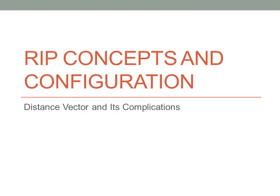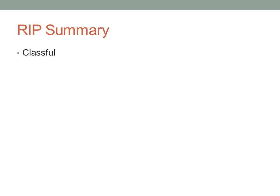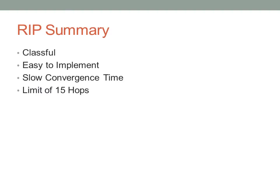Next we're going to talk about RIP and the configuration associated with RIP. To summarize RIP quickly, it is a classical routing protocol that's very easy to implement, and that's one of the powerful things about RIP and why it survived so long. Unfortunately, it has a very slow convergence time and the limit is 15 hops, so you can only use it in very small networks.